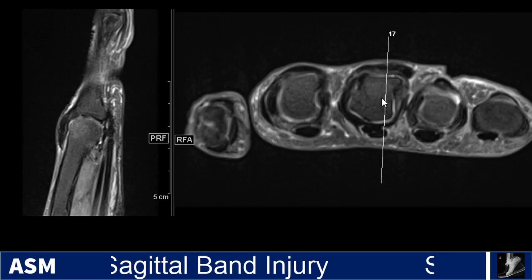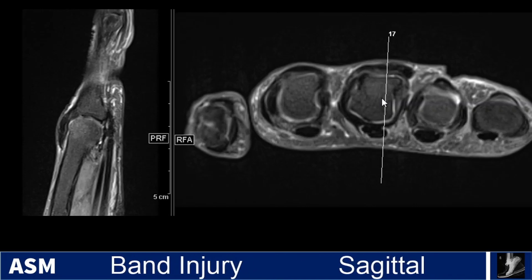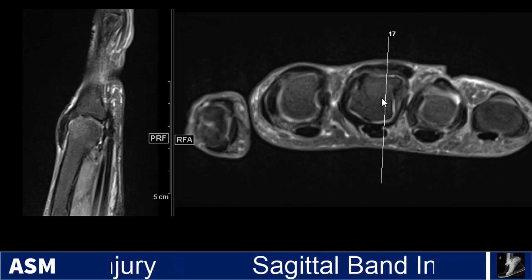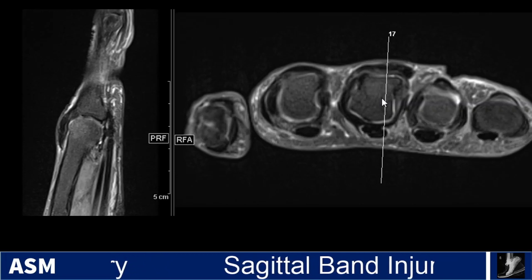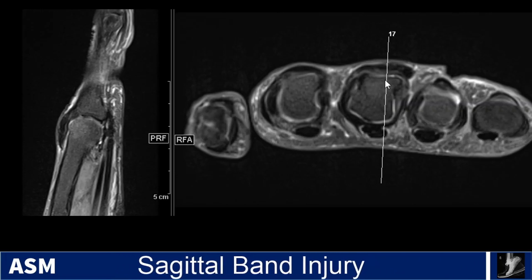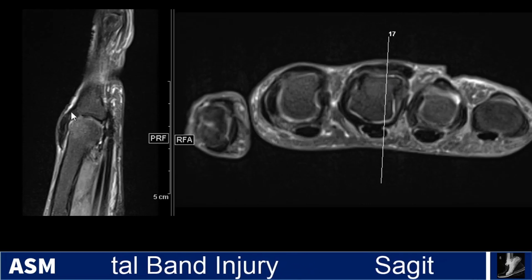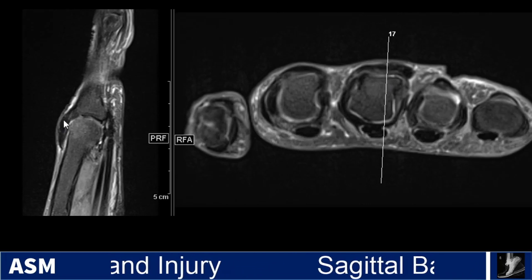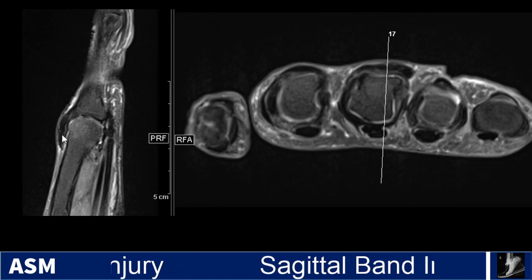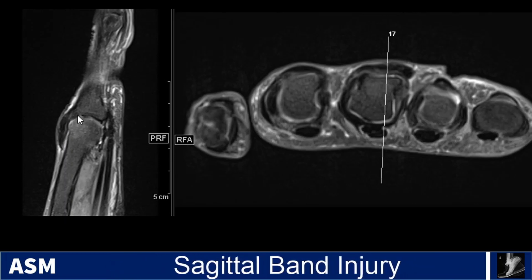I don't have a full clinical history in terms of the mechanism of injury to this patient, but there was some sort of injury that happened while she was either going to the hospital or while she was hospitalized. Right away, if you look at this sagittal image, you can see that there is significant soft tissue thickening along the dorsal aspect of the MCP joint here.